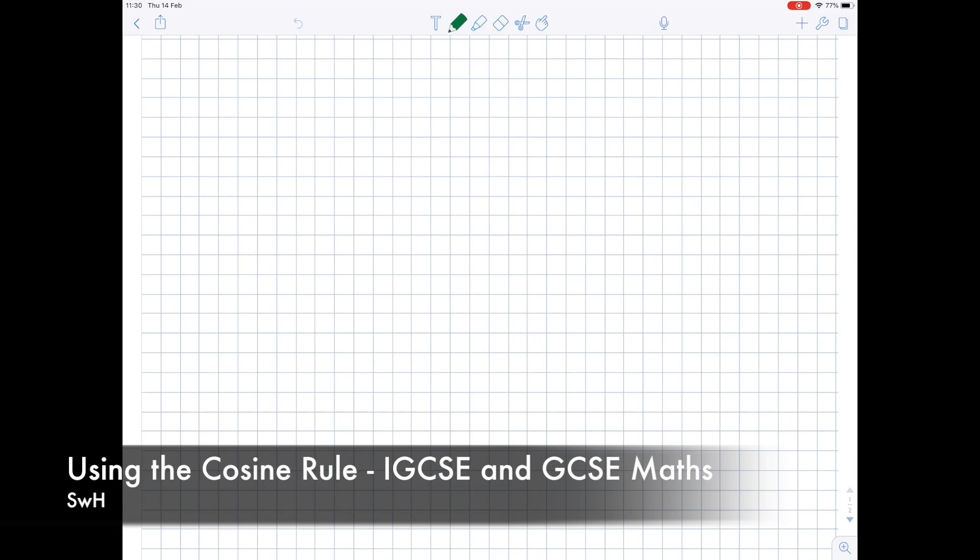In this video, which is an IGCSE GCSE Maths video, we're going to be looking at how we use the Cosine Rule to find unknown angles and lengths in triangles.